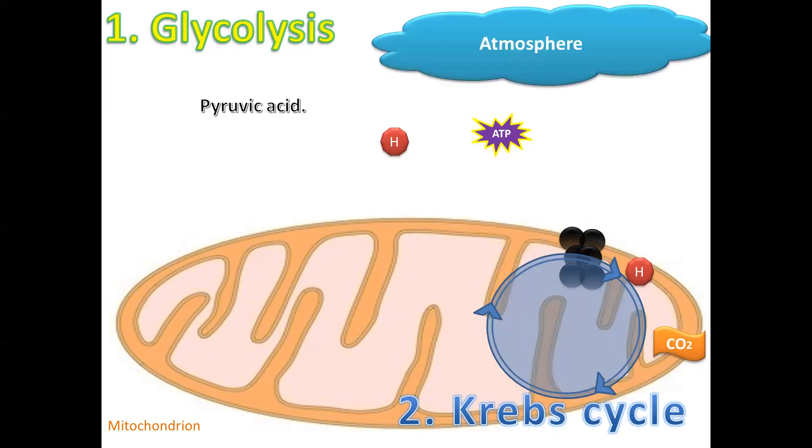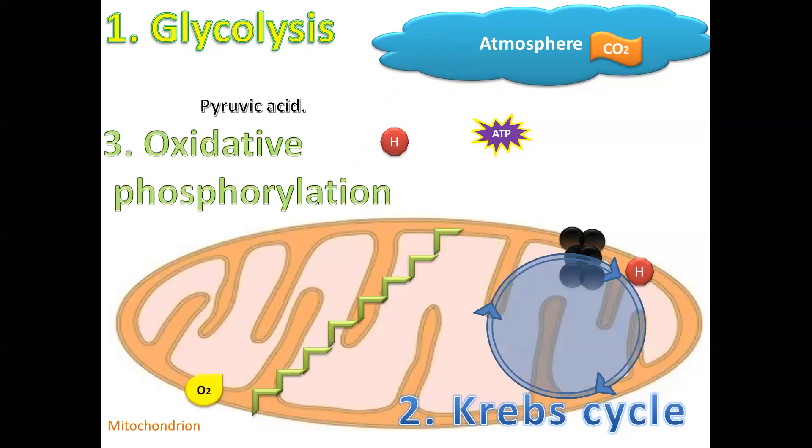This carbon dioxide will be released from the body through exhalation into the atmosphere. The inhaled oxygen which was absorbed into the blood will be used in the next phase, and that is known as oxidative phosphorylation.